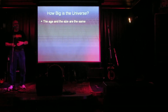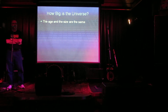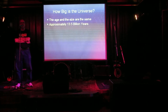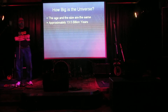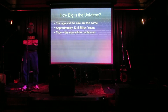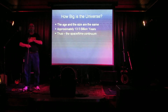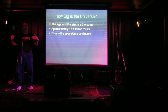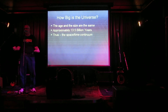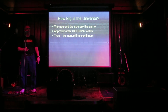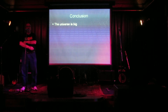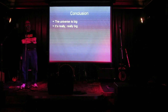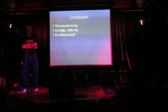How big is the universe? The answer is the age and size are the same. We know the age is approximately 13.5 billion years, and that's exactly the size — it's 13.5 billion light years wide. It's the same as the age because matter is traveling at the speed of light — thus, the space-time continuum. And that's the simple answer. So the conclusion: the universe is big. It's really, really big. In fact, it's astronomical. And that's my talk. Thank you.